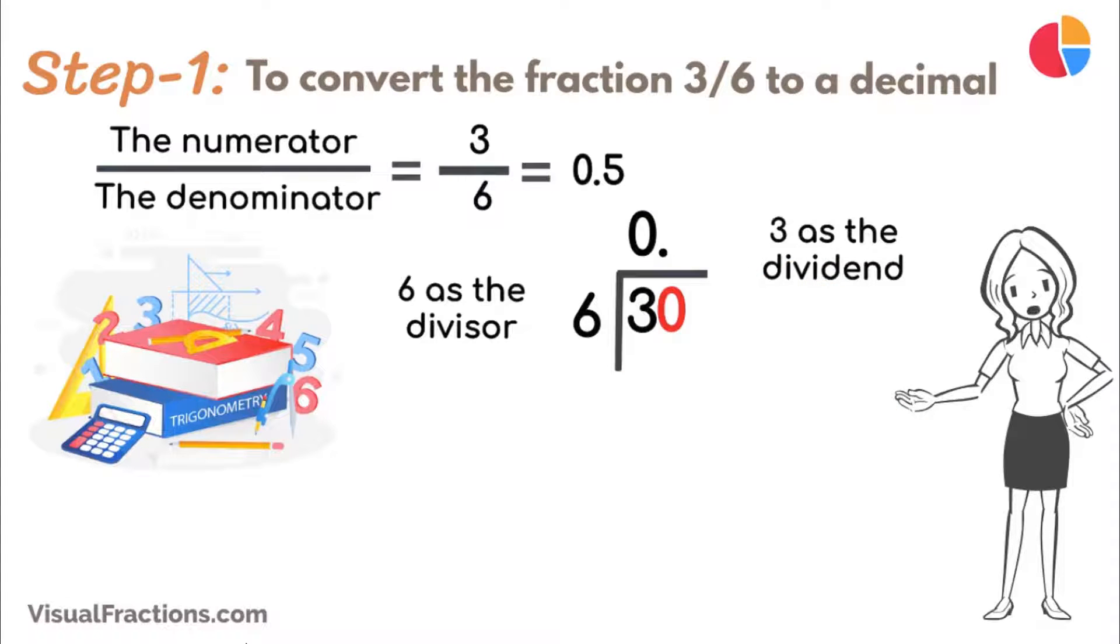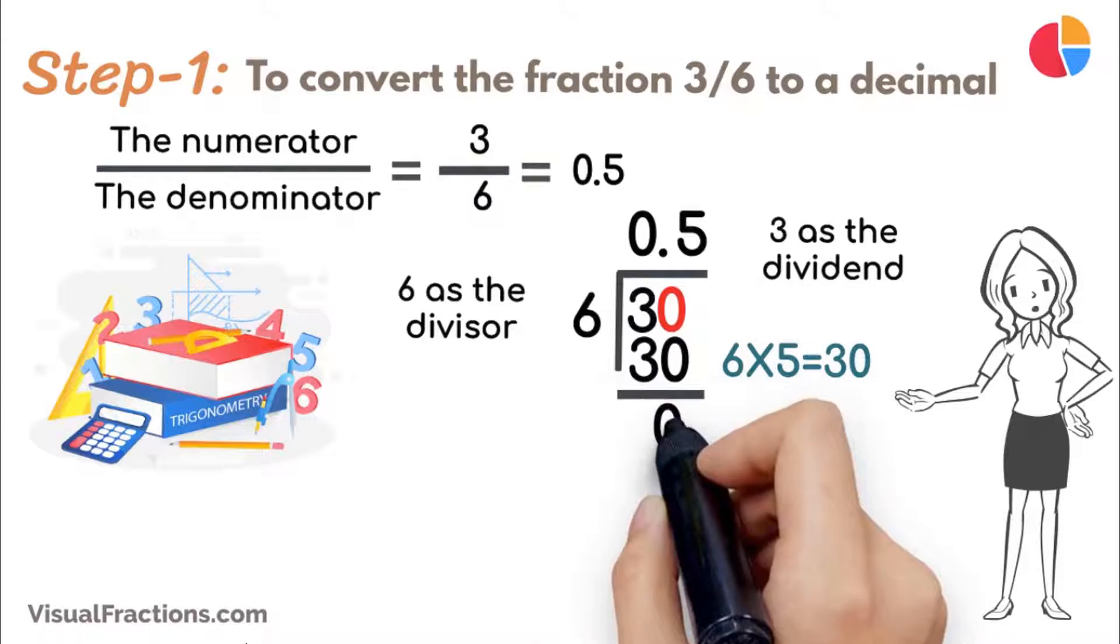6 goes into 30 five times, putting 0.5 in our quotient. Multiply 6 by 5 to get 30, and subtract this from 30, leaving a remainder of 0.